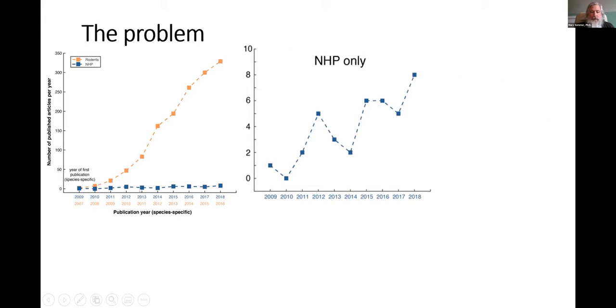If we blow up this blue curve, the non-human primate optogenetic work is still maybe a dozen or so a year. It's slowly increasing, but there are some serious problems and a lot of data goes unpublished. About probably half the data we collected in this open resource is unpublished.